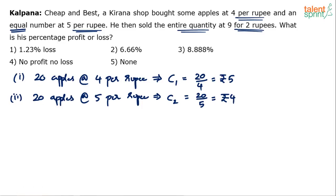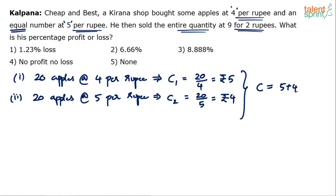Remember, quantity has to be equal — 20 and 20. You may ask why I took 20. You can take any value; it has to be a multiple of 4 and 5 so calculation becomes easy — like 20, 40, 100, or 200. If you take 16, the calculation becomes tedious with decimals. So better take a multiple of 4 and 5, which is 20. He spent total 5 plus 4 equals 9 rupees. Total cost price is 9 rupees for 40 apples.